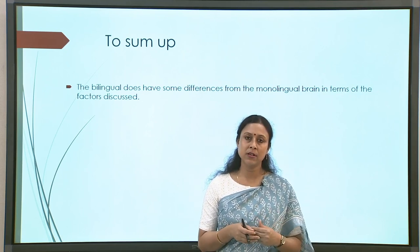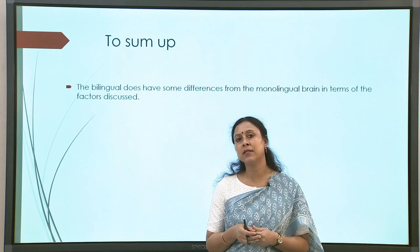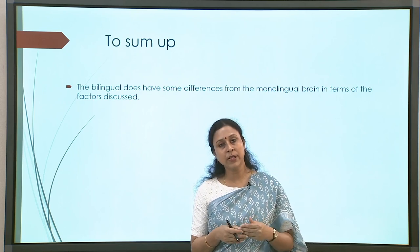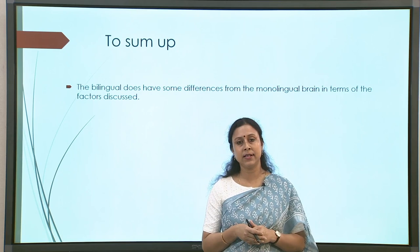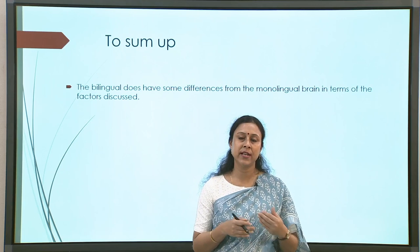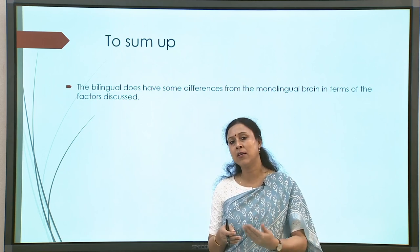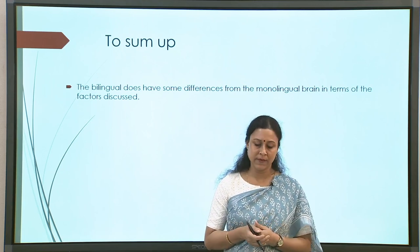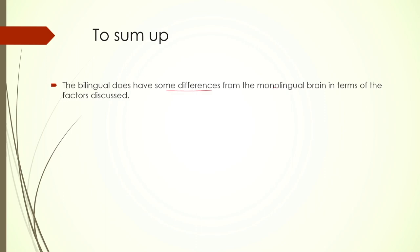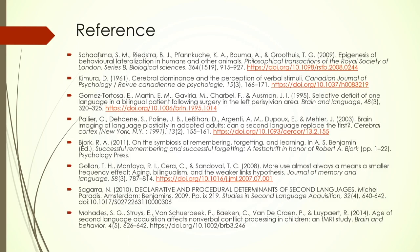So far we have seen that the bilingual brain does have some differences compared to monolinguals — not only in terms of brain physiology, but also in activation pattern and performance on different kinds of tasks. Within bilinguals themselves there are differences in activation patterns as well as structural patterns — whether it is the sensory motor area or the prefrontal cortex that gets activated. Bilinguals do have some differences from the monolingual brain across all of these factors discussed. This is where we come to the end of this segment.